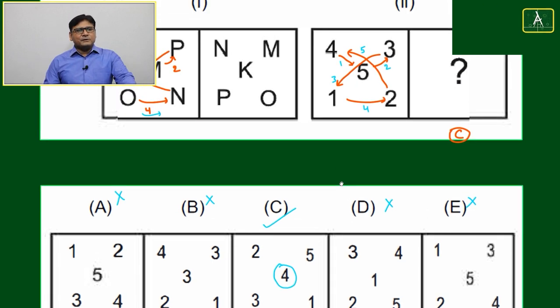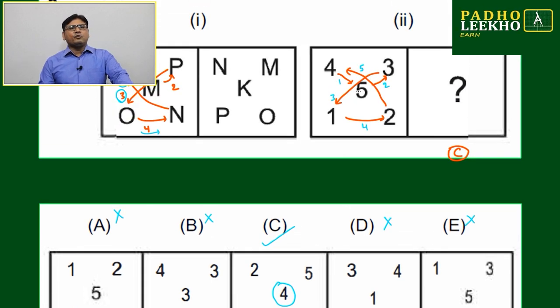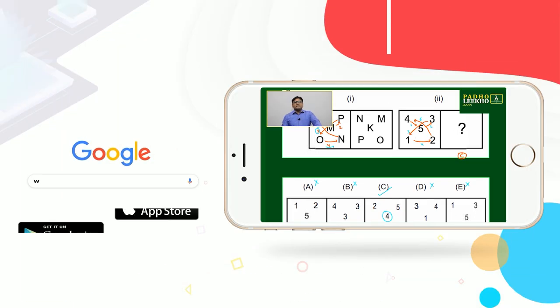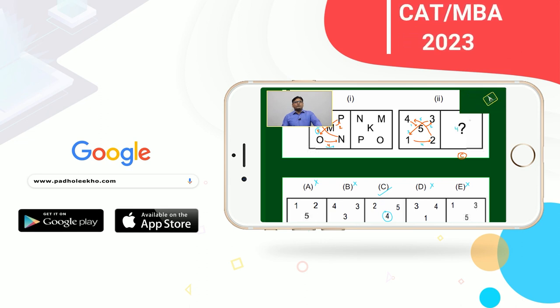But just for understanding purposes we will do it. Step one, four will come here, five will go here. Step two, five will go here, three will come here. Means we can write here four and five will go there. Step three is three will come here.